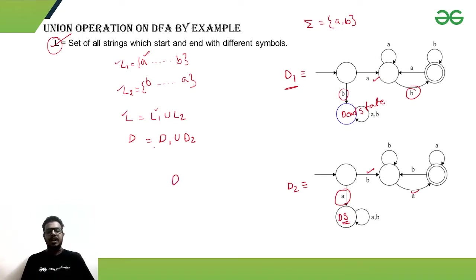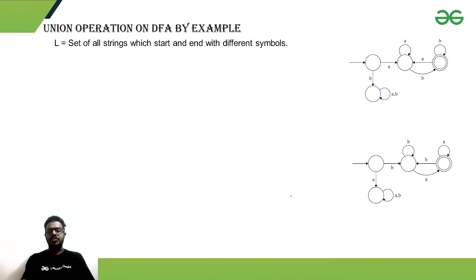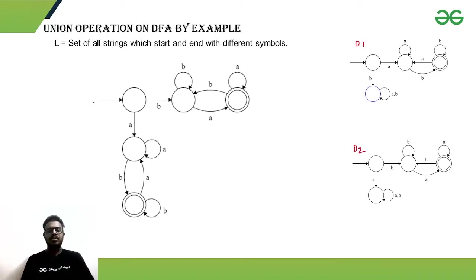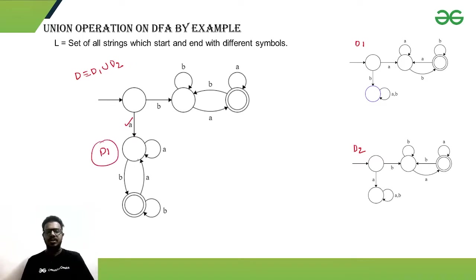Our final DFA D is the union of D1 and D2. In the union DFA D, if the string is starting with A it follows D1, and if it is starting with B it follows the D2 section.